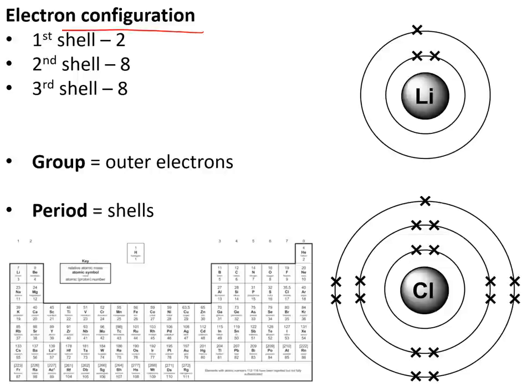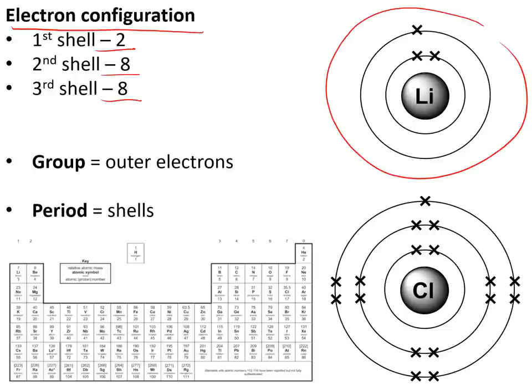Electron configuration tells us how the electrons are arranged around an atom. They're arranged in shells. The first shell can hold 2 electrons, the second one 8, and the third one also 8. Lithium has 3 electrons in total: 2 in the first shell and 1 in the second shell, written as 2.1. Chlorine has 17 electrons in total: 2 in the first shell, 8 in the next shell, and 7 in the final shell.